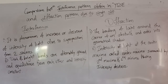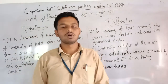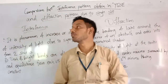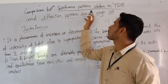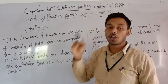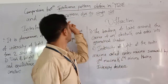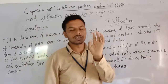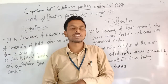Hi students, good morning to all of you. This lecture is on the comparison between the interference pattern obtained in Young's double slit experiment and the diffraction pattern due to a single slit. You know that in Young's double slit experiment, we use two coherent sources.